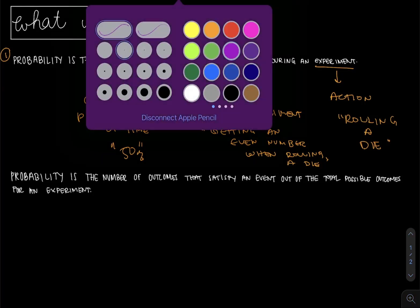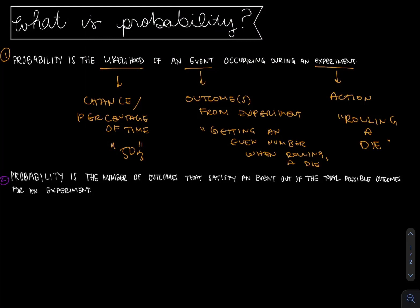Now this feels a little stuffy. Let's see if we can't unpack the second statement. Probability is the number of outcomes that satisfy an event out of the total possible outcomes for an experiment.